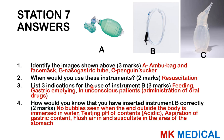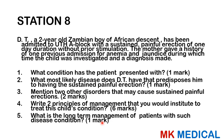Instrument A is an Ambu bag with a face mask. B is a nasogastric tube. C is a penguin sucker. These three instruments are used during resuscitation. An NGT can be used for feeding, gastric emptying, and administration of oral drugs in unconscious patients. To confirm correct placement: immerse the external end in water — no bubbles should appear; aspirate gastric content and check pH (acidic); flush air in and auscultate over the stomach to hear the rush of air.